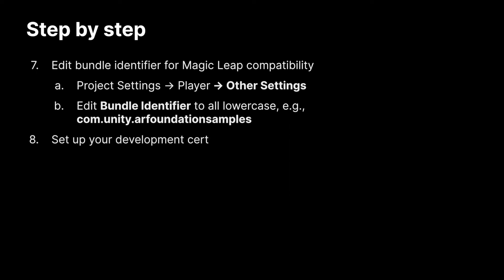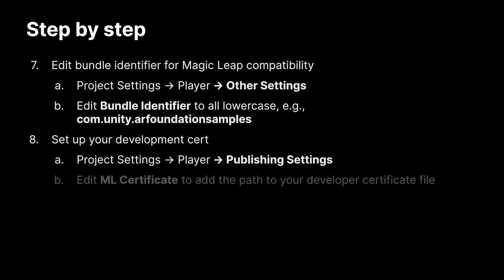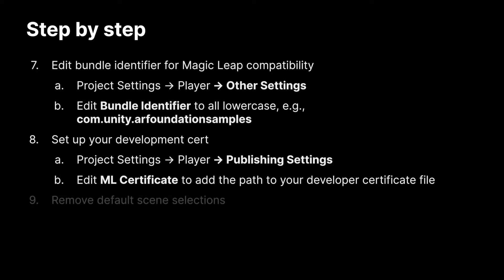Then specify the location of your development cert — it's here in project settings, player, publishing settings. Note the folder structure where the development cert is in the same folder as the associated private key. Okay, almost done. Now let's reset the included scenes — go to file, build settings, and uncheck all the scenes. Now that was a lot, but we're all set.